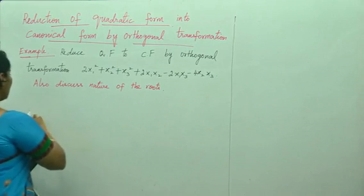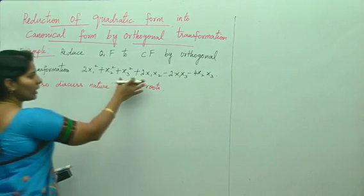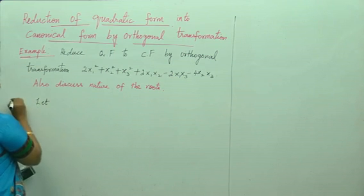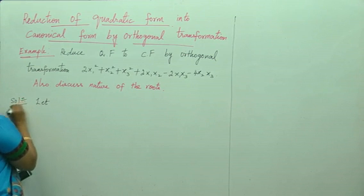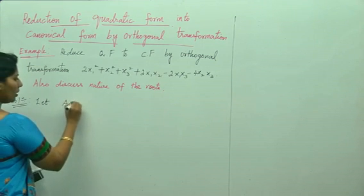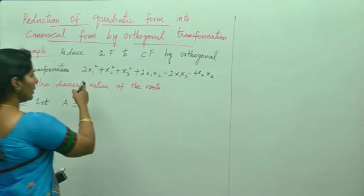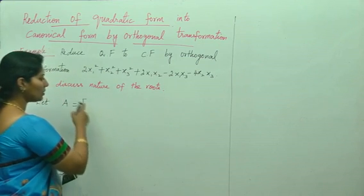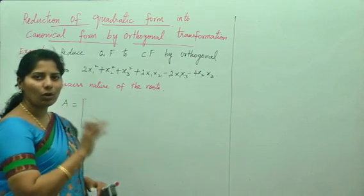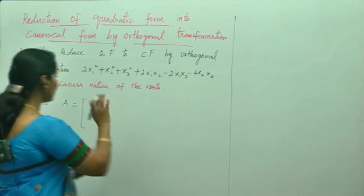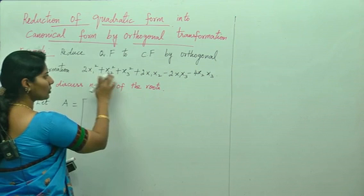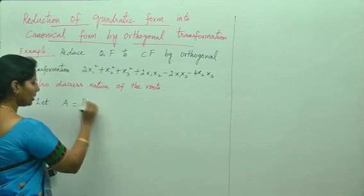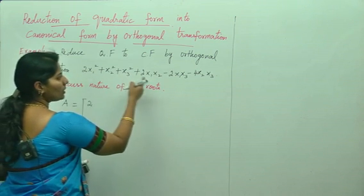Now, the first step is to write the given expression in matrix form. Let A be the corresponding matrix. You write the coefficients of x1 squared, x2 squared, x3 squared as the diagonal elements — just as they are, without any modification.